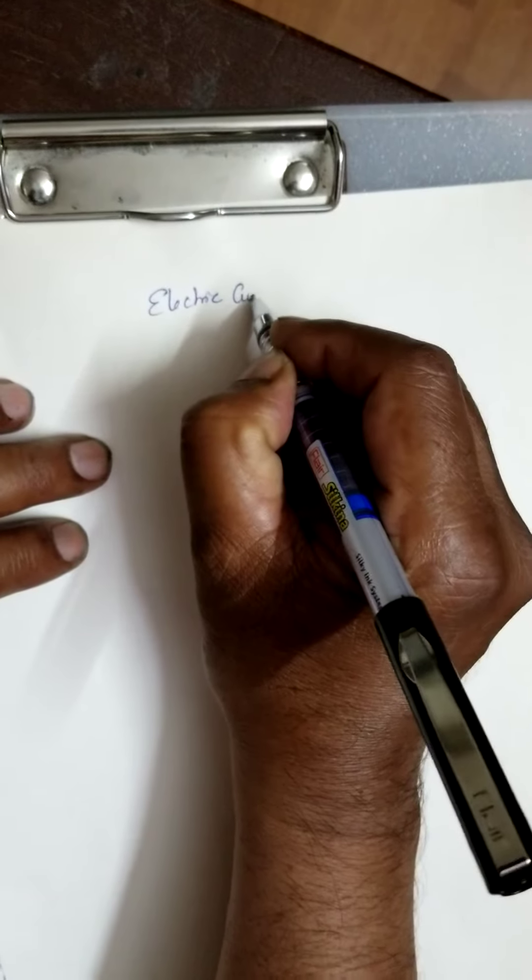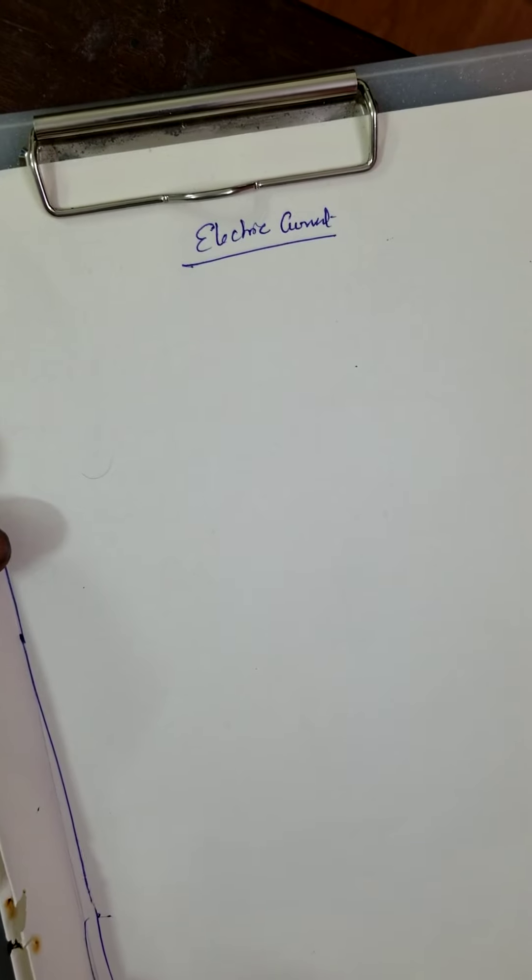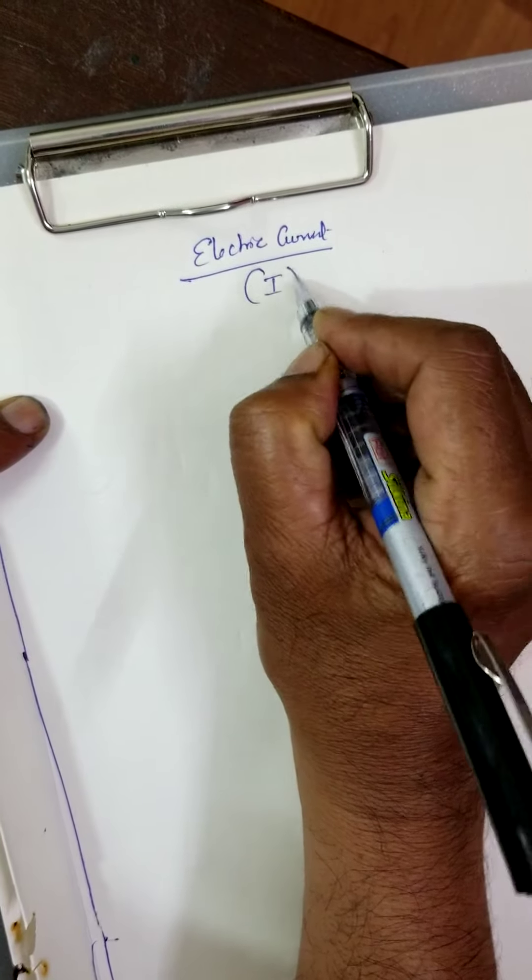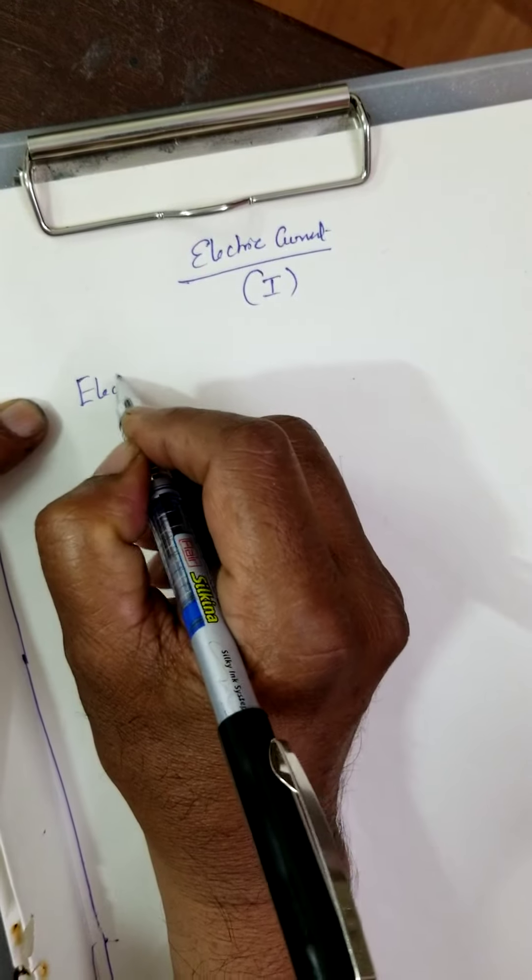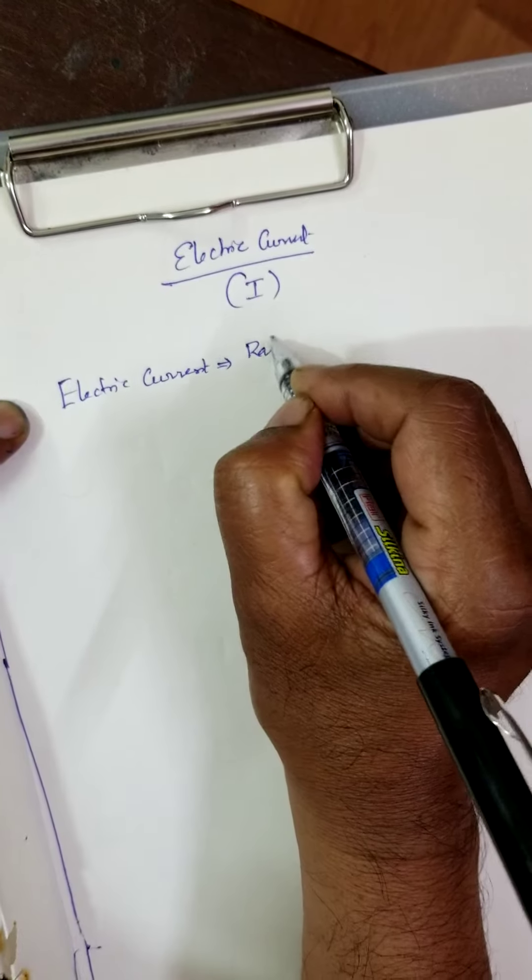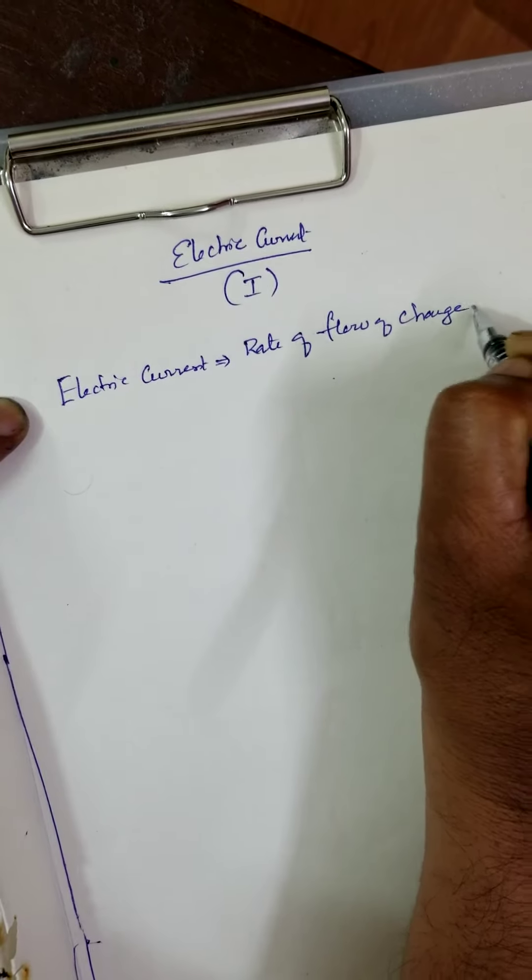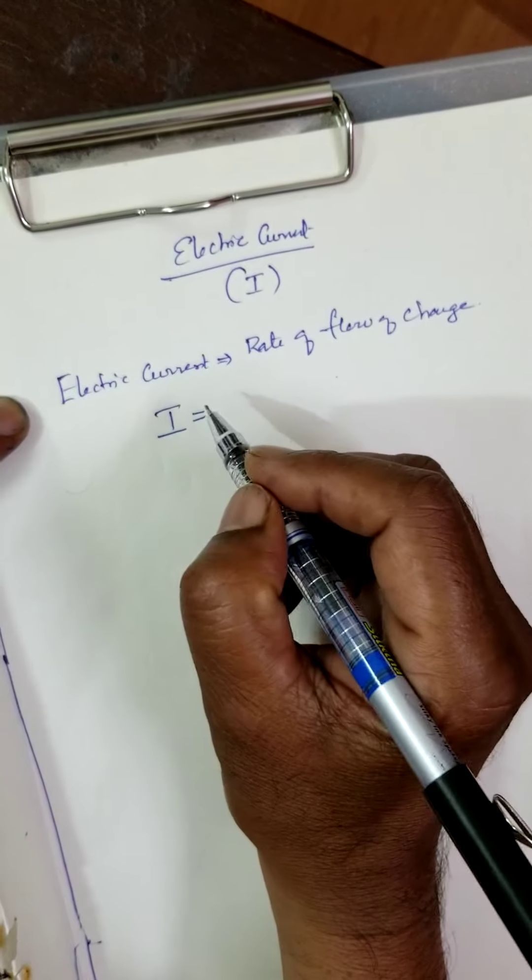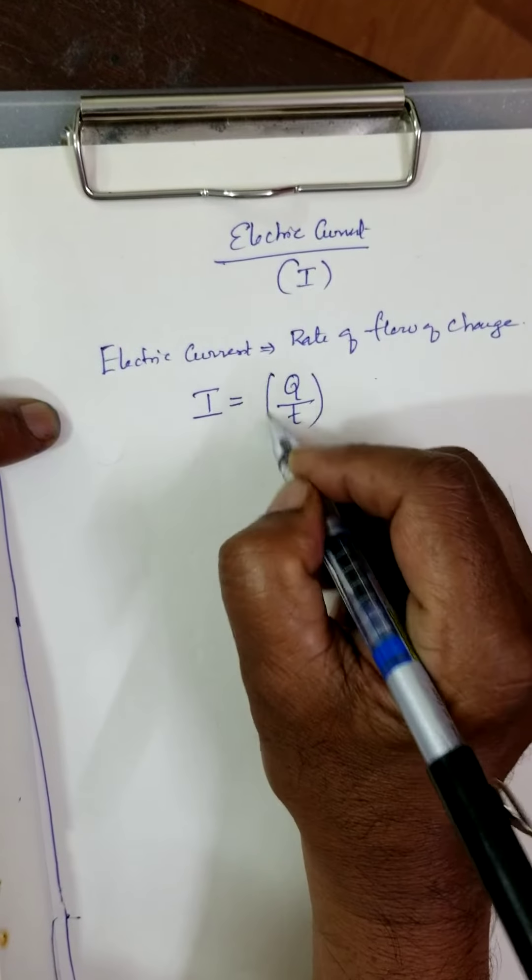Electric current. What is electric current? Electric current symbol is I. Electric current is rate of flow of charge. That is I, the symbol for electric current. Q is flow of charge divided by time. This is called rate of flow of charge.